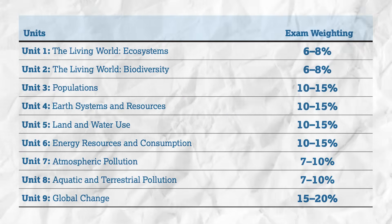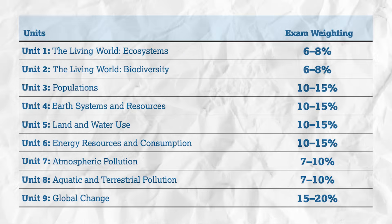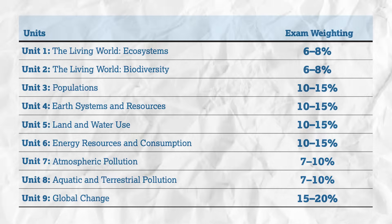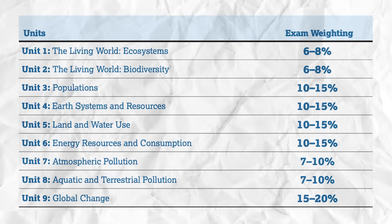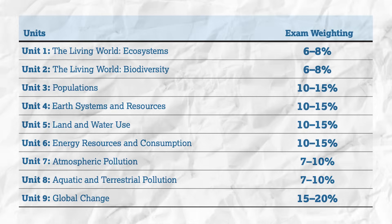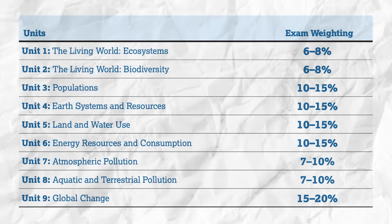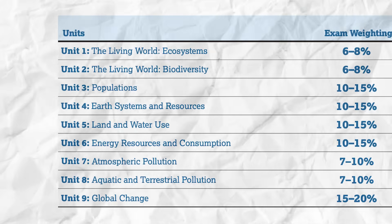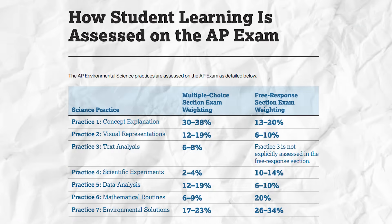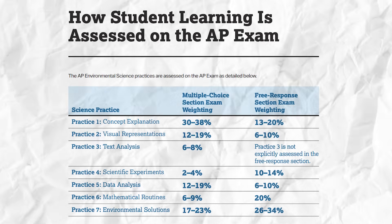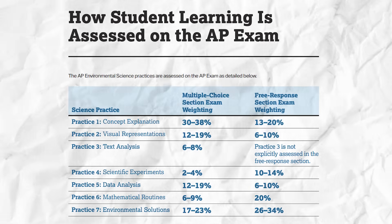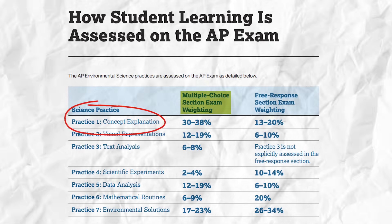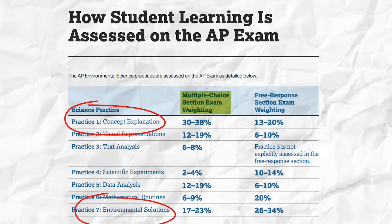Units 1 and 2 will each make up 6-8% of the exam, units 7 and 8 will each make up 7-10%, units 3 through 6 will be 10-15% each, and unit 9 will be 15-20% of the exam. We can also see a skill breakdown here, and the key thing to notice is that the majority of section 1 comes down to concept explanation and environmental solutions.